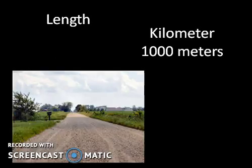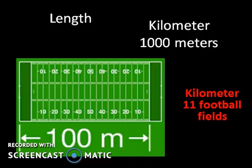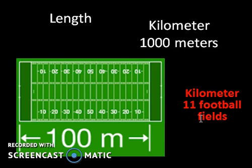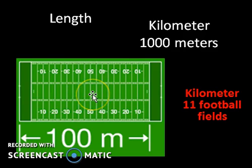On the opposite end, there are 1,000 meters in one kilometer. So when we're talking about something very long, we might be speaking in terms of kilometers. Here, you can see that a kilometer is the distance of 11 football fields. If we imagine a football field and take the distance from one goal line all the way to the back end of the other goal line, that would be about 100 meters. String 10 of those distances and you get a kilometer.